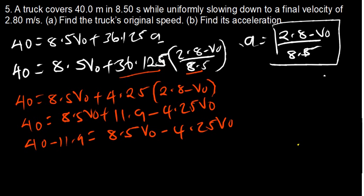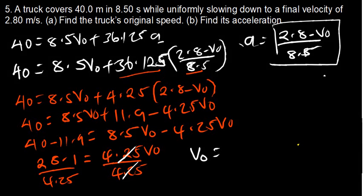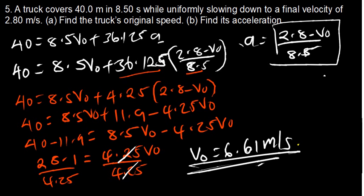So 40 minus 11.9 gives 28.1, and 8.5 minus 4.25 gives 4.25 V-initial. Dividing both sides by 4.25, the 4.25 cancels, and we get V-initial equals 28.1 divided by 4.25, which gives 6.61 meters per second. That is the initial velocity — that is the answer to Part A.